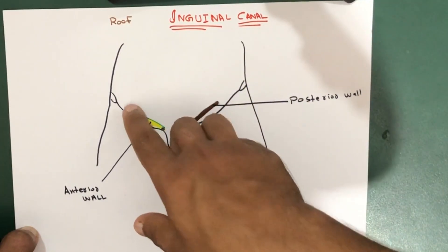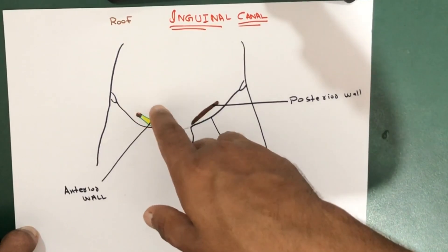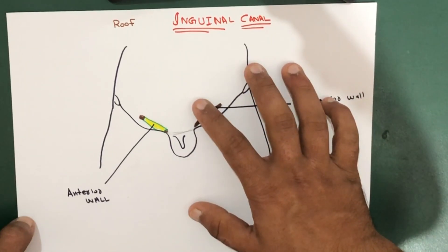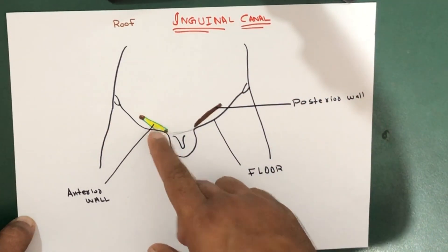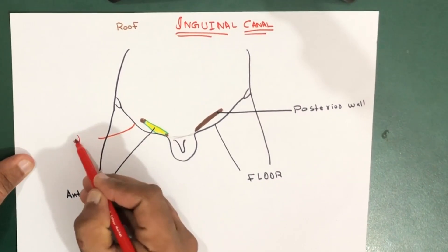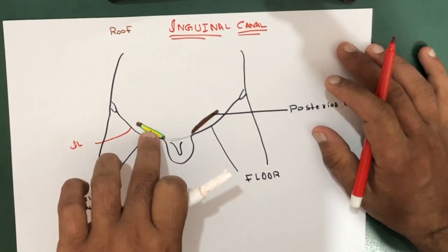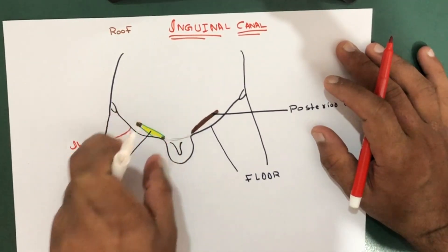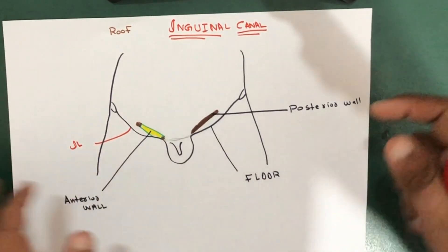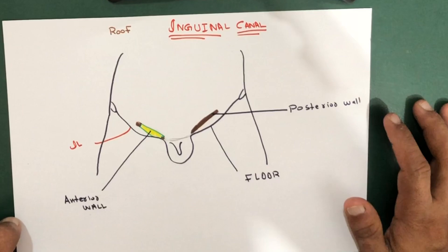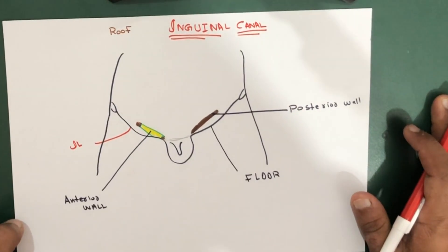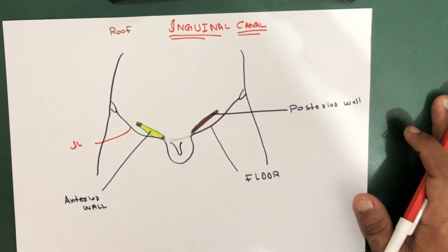The inguinal canal extends inferiorly and medially through the inferior part of the abdominal wall. It is superior and parallel to the inguinal ligament. It is also a common site of herniation — we'll be discussing two types: direct and indirect herniation.